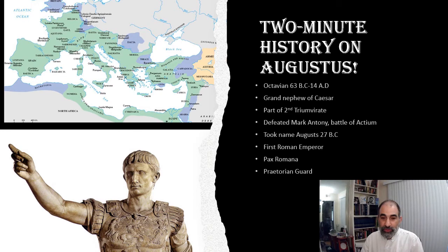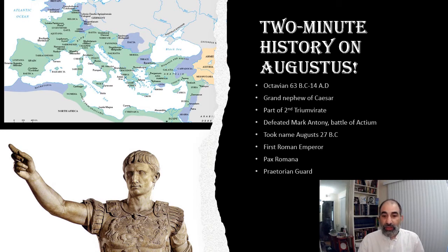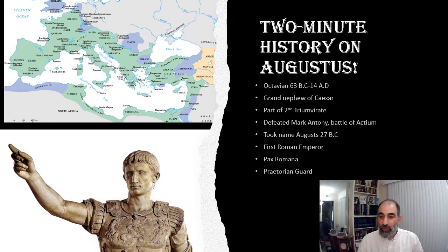He's part of what is called the Julio-Claudian dynasty, and he sets up what is called the Pax Romana. The Pax Romana is this kind of Roman peace — a 200-year period where Rome has more stability after the declining period of the Republic.